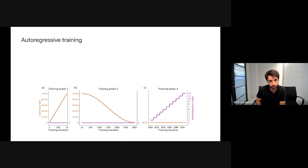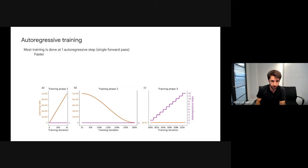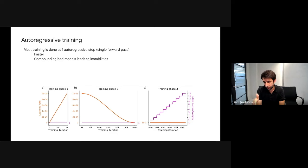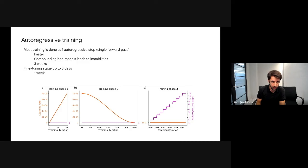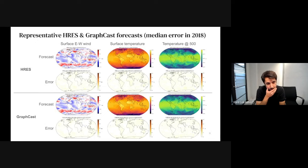We spend most training time on a single autoregressive step — 300,000 steps training at single 6-hour prediction. This is faster, since training with multiple autoregressive steps multiplies cost proportionally. Starting autoregressive training with a bad model can cause instabilities, so we wait until we have a good model. This process takes about three weeks of training. We then fine-tune up to 12 autoregressive steps, taking about one additional week.